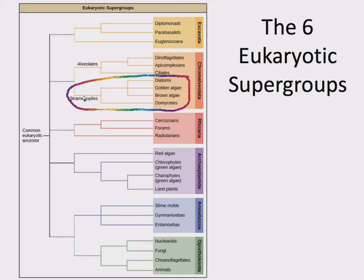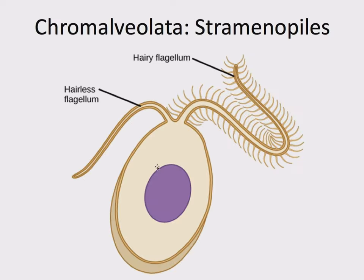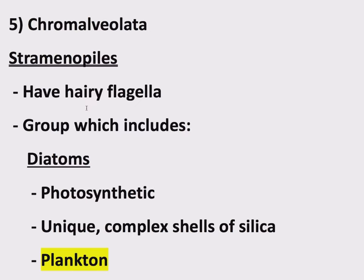That was half of Chromalveolata — those three groups. The other clade within this supergroup is straminopiles. Their distinguishing feature is that they have hairy flagella — a flagella with these hairs attached to it. It's a weird phrase, but it's a distinguishing feature of members of this clade straminopiles within the supergroup Chromalveolata. This group includes several other groups, one of which is called diatoms.